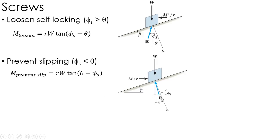So in this case, the angle that I'm looking at is the difference of theta minus phi_s, or the lead minus the friction angle. Because now the lead is bigger than that friction angle, and it's not a self-locking screw.